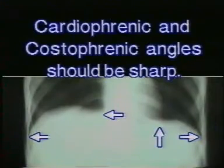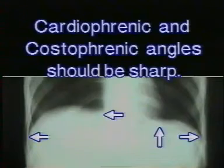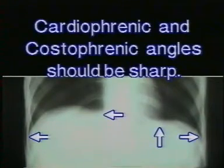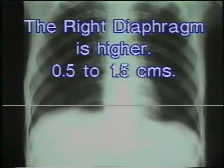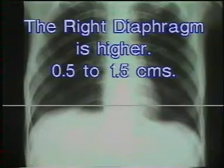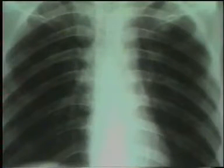Then inspect the cardiophrenic and costophrenic angles — they should be sharply defined. Any obliteration of any of these angles is pathological. The right diaphragm should be 0.5 to 1.5 cm higher than the left diaphragm, and both should be smoothly curved.